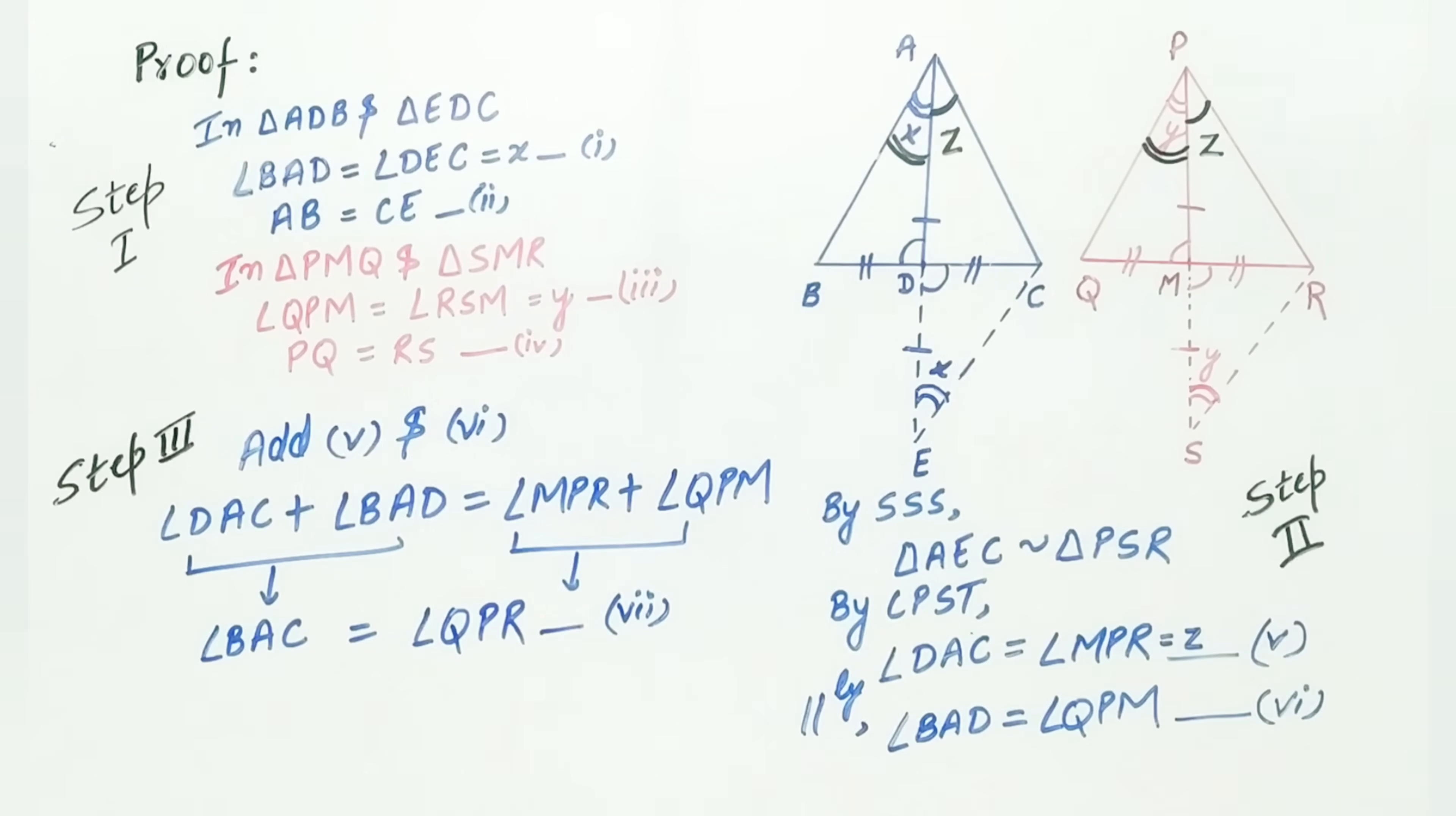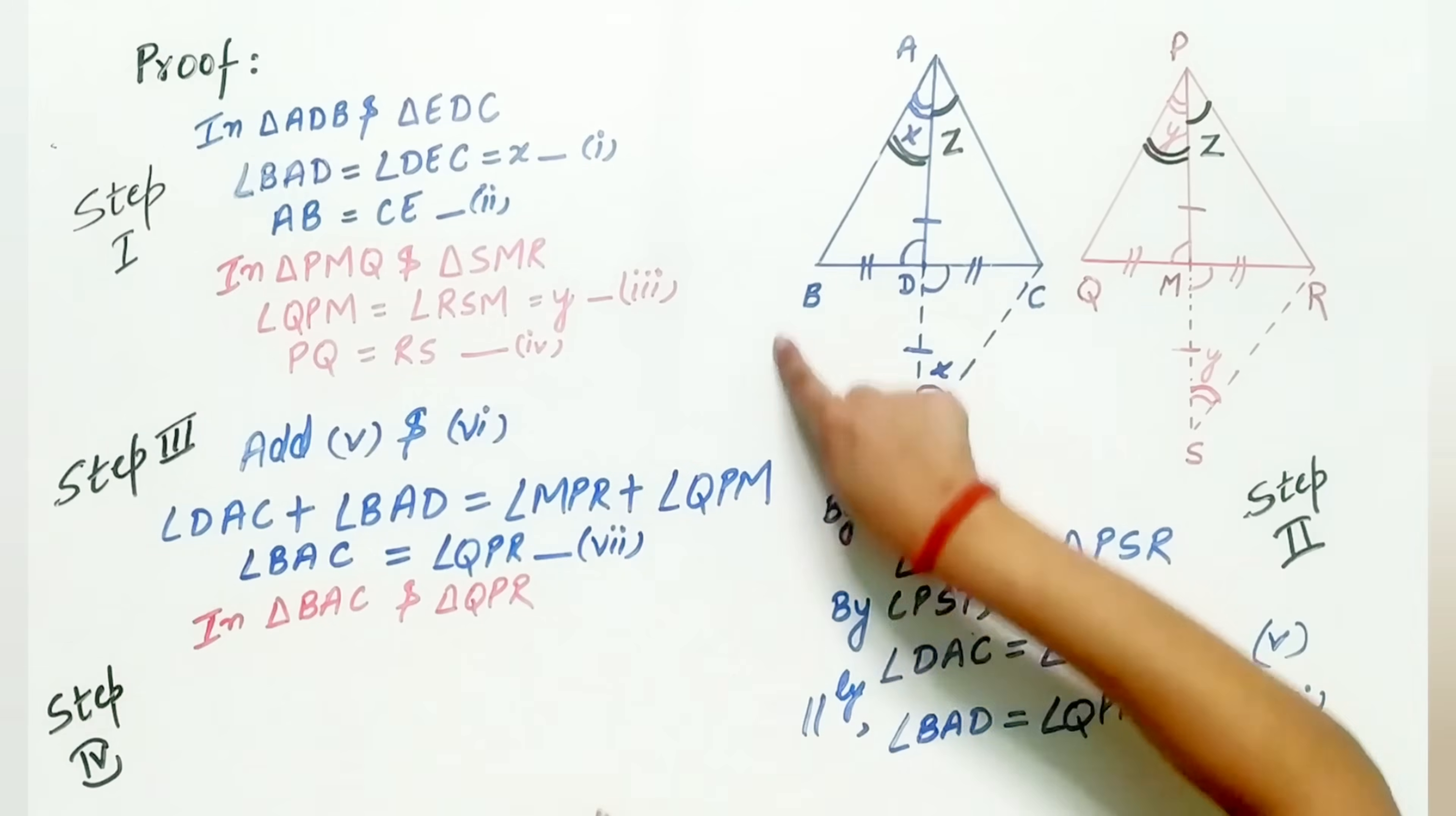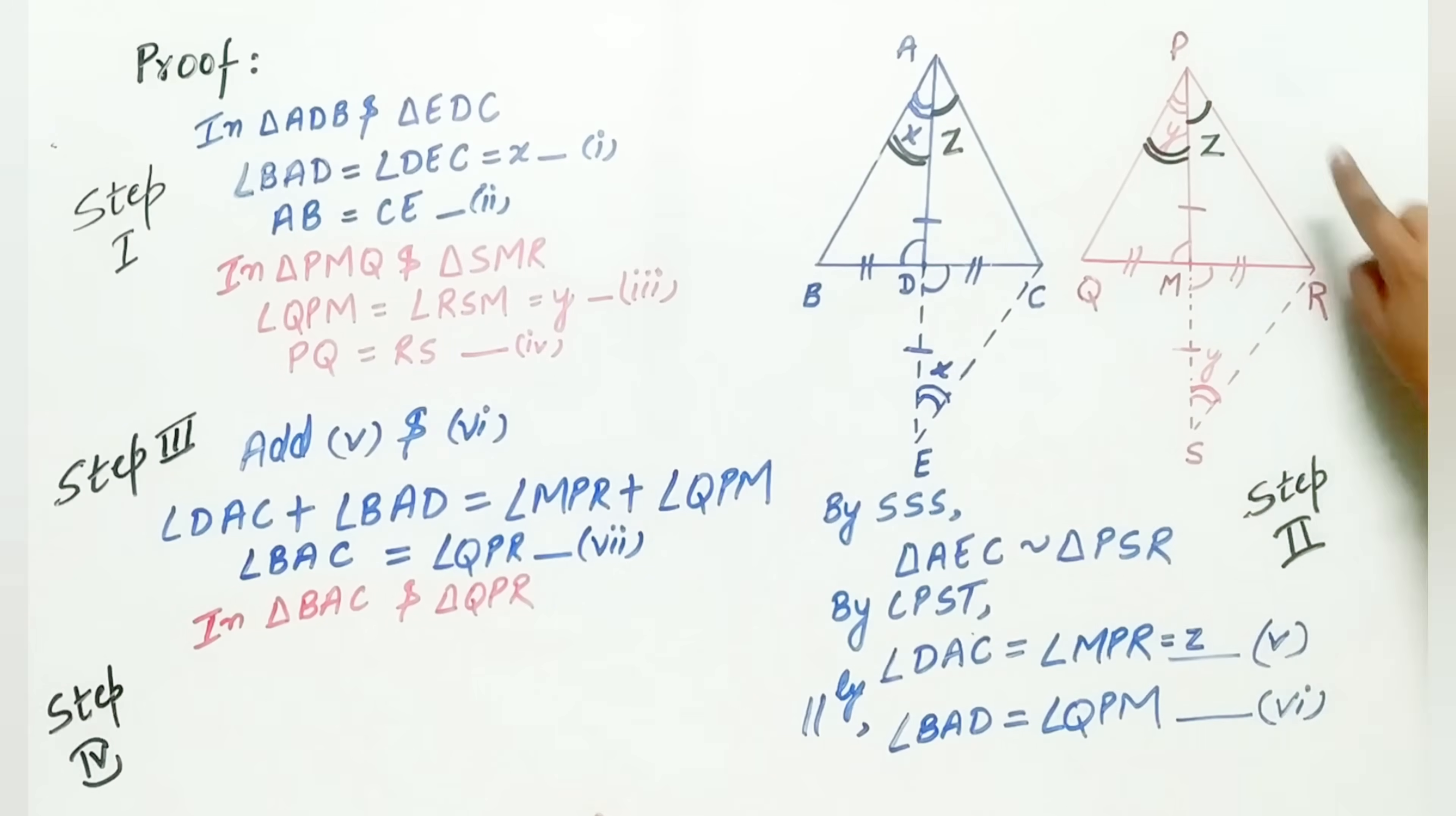Now, let's move to step number 4, the last step. Take triangles ABC and PQR. In triangle BAC and triangle QPR,